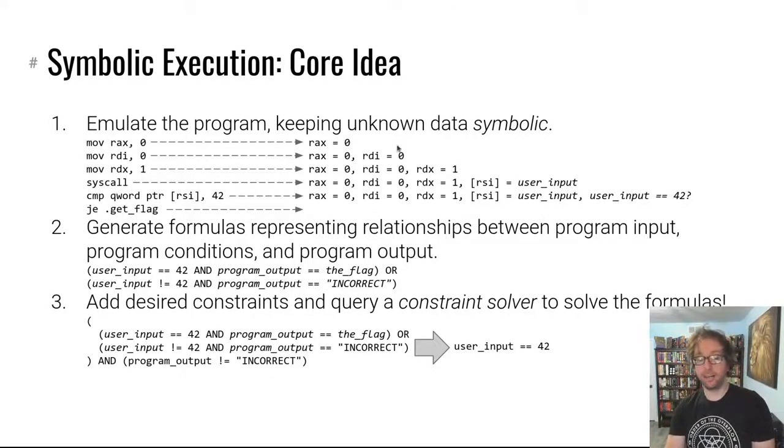It could be a one, a zero, or X. Then later on as you build up an understanding of what data is known, what data is unknown, and as unknown data starts being checked using compare instructions and those checks start being acted on using conditional jumps, you can actually build up formulas that describe the behavior of the program.